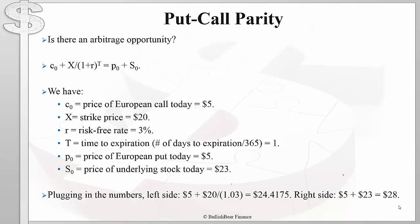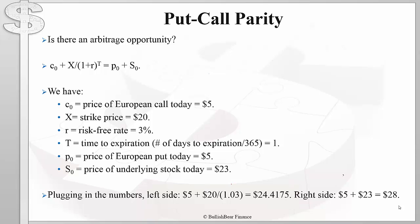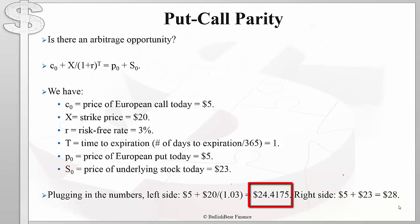The price of the European put option is also $5, and the price of the underlying stock today is $23. If we plug in the numbers, we get the left side of the put-call parity equation as $24.4175. The right side of this equation is $28. Clearly, the left side is not equal to the right side, and therefore, since the put-call parity equation has not been respected, there must be an arbitrage opportunity.